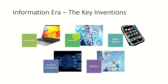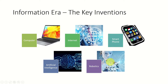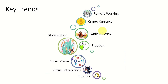Now moving to the information era or modern era, which started in the 1950s when the electronic computer was invented. Another important milestone is the introduction of the internet, which started in 1969 but became a global network in the 1980s. The introduction of smartphones made information technology reach common people, and other key developments include the use of AI, robotics, and cloud computing. Let's now look at some key trends in the information era.